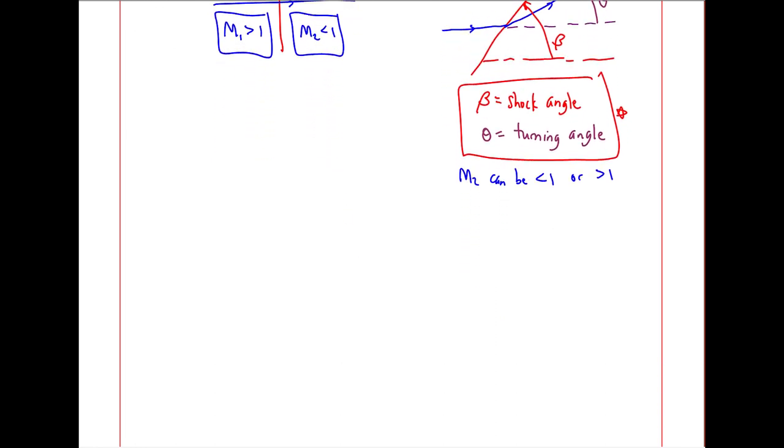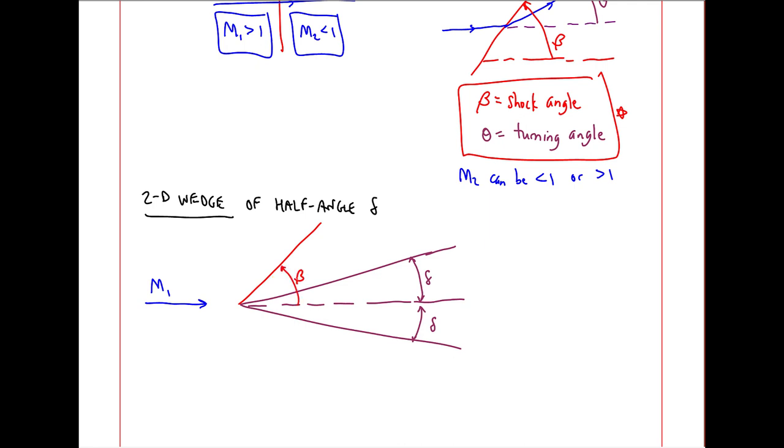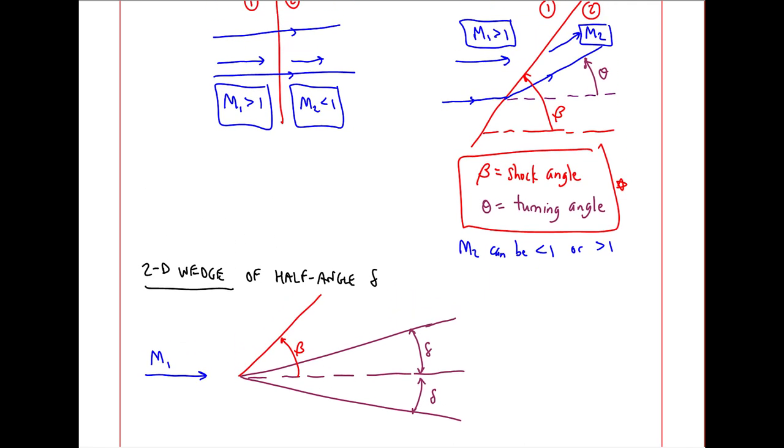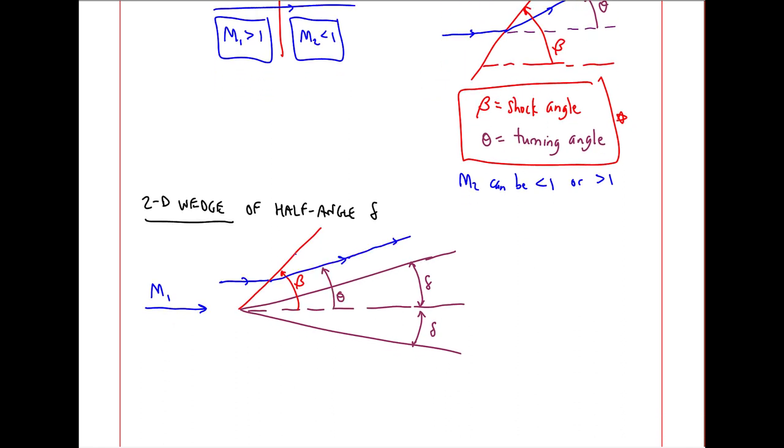Let's consider, for example, a 2D wedge of half-angle delta. And this wedge is aligned directly into the flow. With Mach number 1 coming in, we'll get an oblique shock right at the nose of shock angle beta. And as we sketched up here, the flow will turn at turning angle theta. But the flow after the turn has to be parallel to the wedge, since the wedge is a solid wall. And we're ignoring boundary layers. So here, theta has to equal delta.